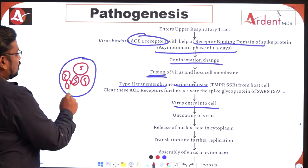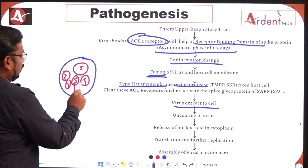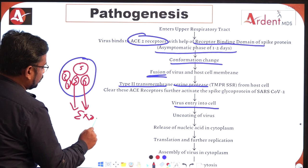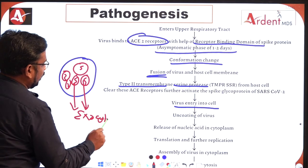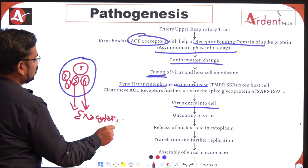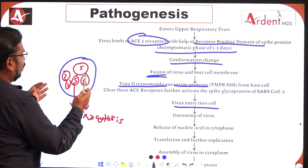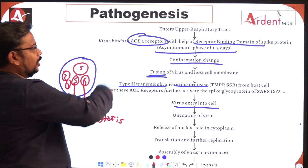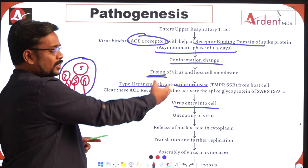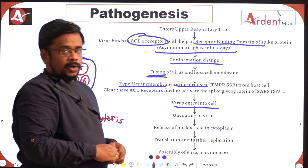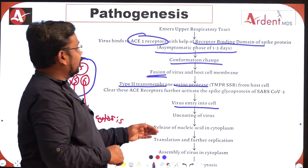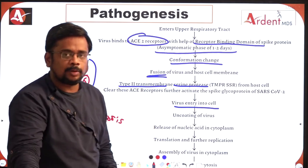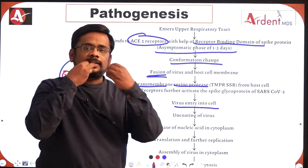Once assembly of the virus occurs, it undergoes exocytosis — it breaks out and all the new viruses come out, which then infect all the other alveolar cells. This is what happens in the pathogenesis.